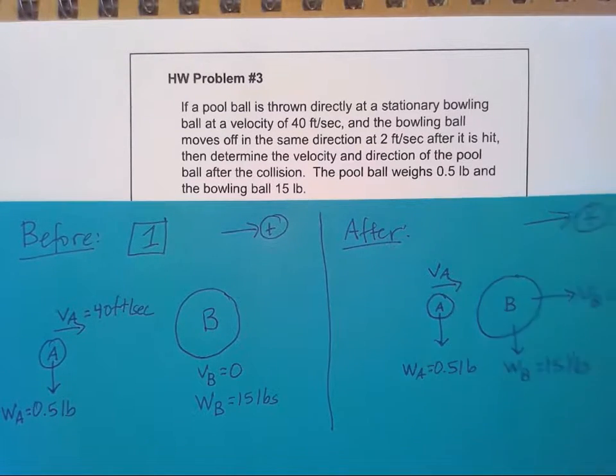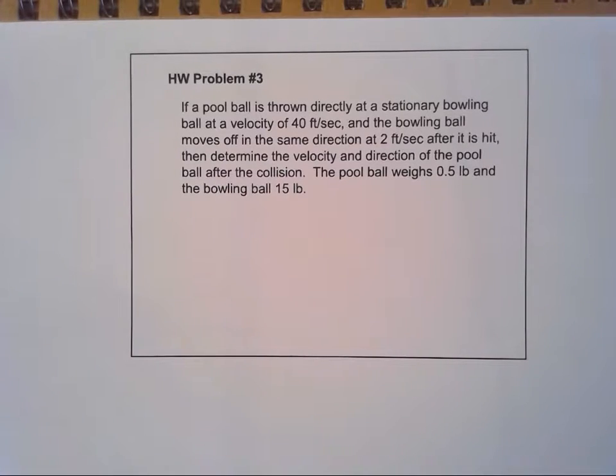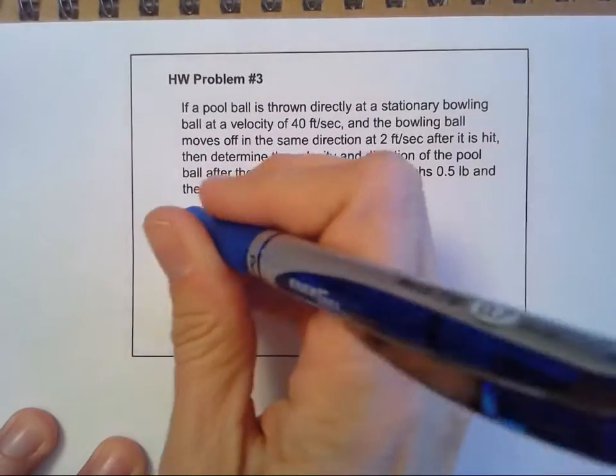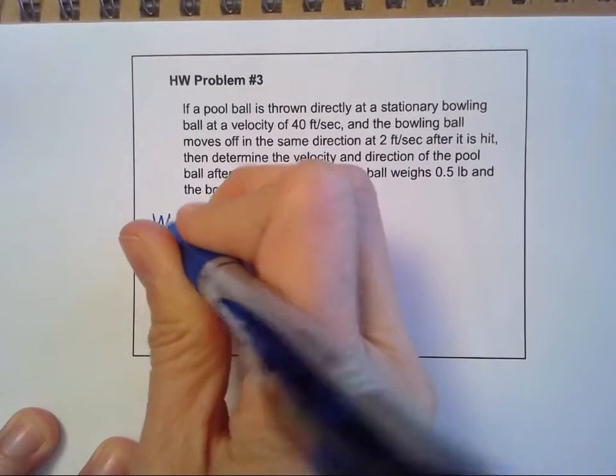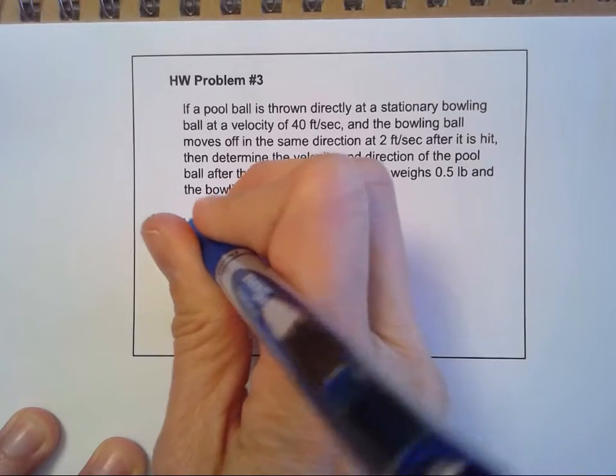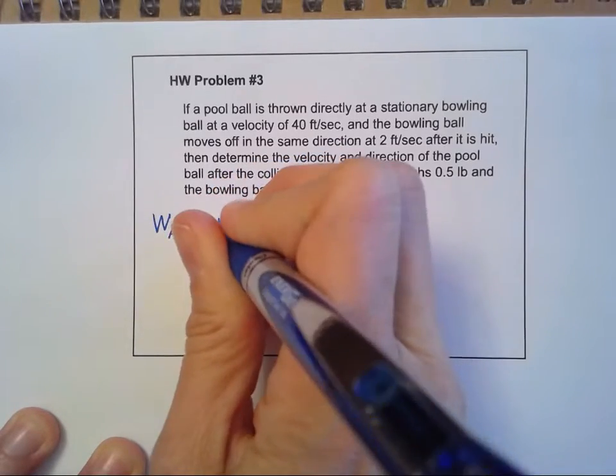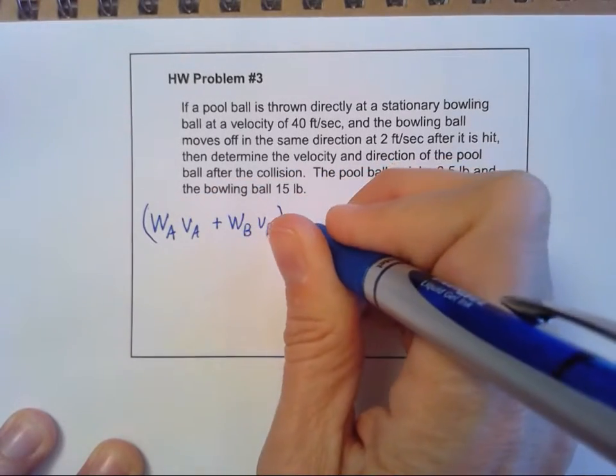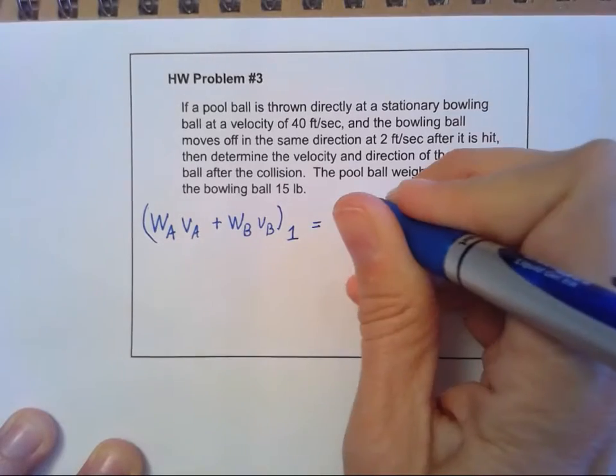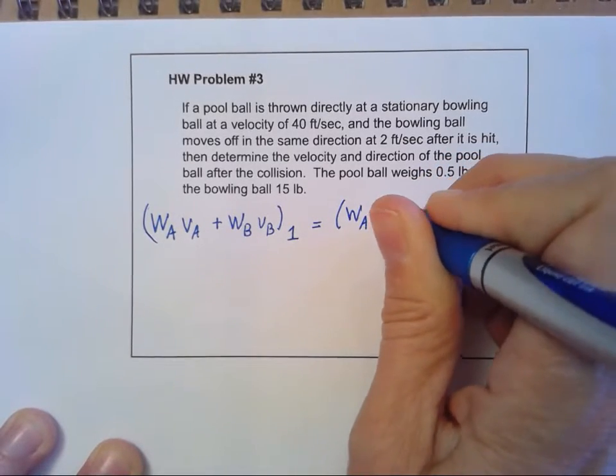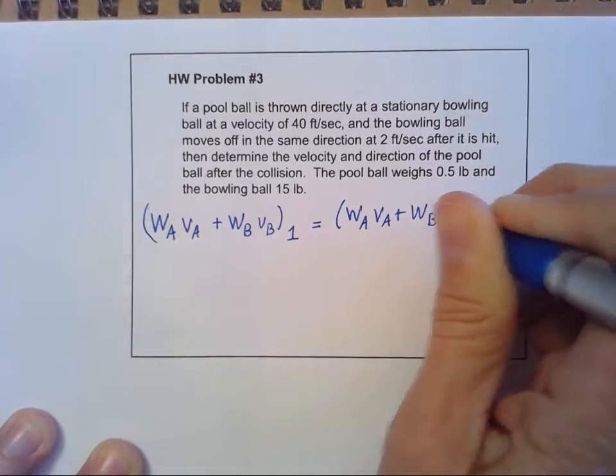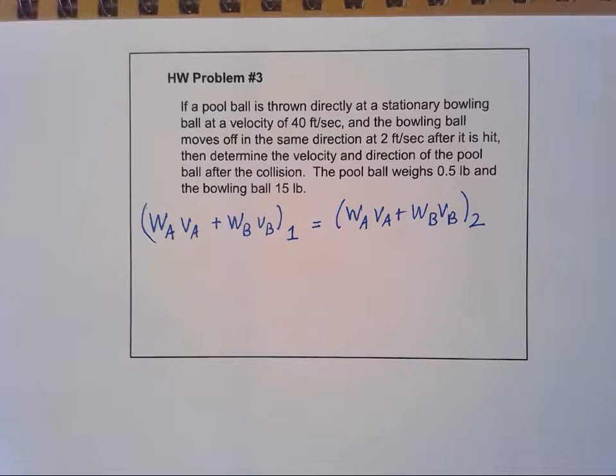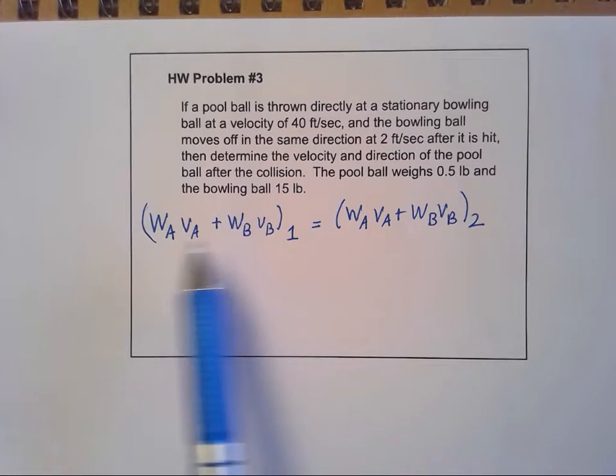I'm not going to be able to fit all this on the screen. So I'm going to put that to the side and just write out my equation here. I have W_A V_A plus W_B V_B, and that's all my before. And that's going to equal my weight times velocity plus weight times velocity of B after. So conservation of momentum, I have to have that before equal to after.